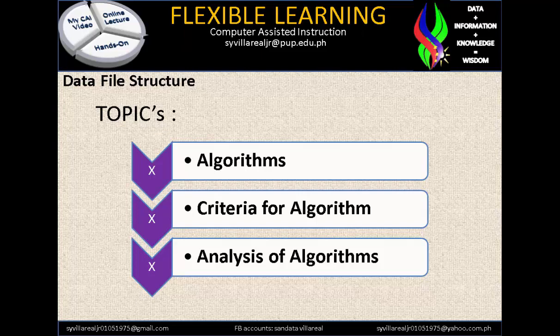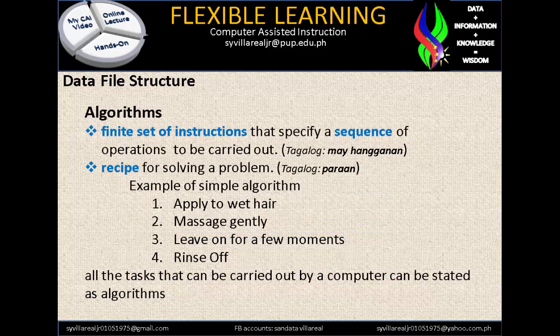Let's proceed to Algorithms. The meaning of Algorithm is a finite set of instructions that specify a sequence of operations to be carried out. It has an end — there is no such thing as continuous instruction without ending. It is also considered to be numerative; there should be a guide of numbers, like alphabet and numeric.